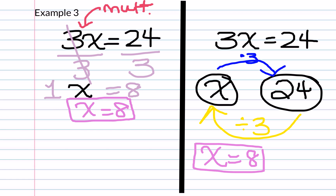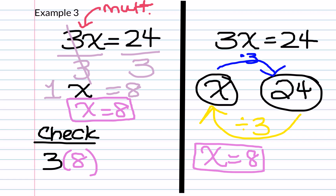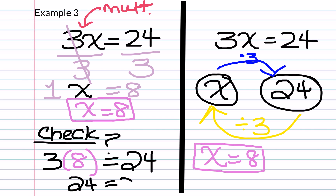Don't forget — when you are done with your problem, you must check your solution. We'll do it using substitution. We write our check, and wherever we see an x, we put the number 8. Remember your parentheses, because that is very important. Now we ask, is 3 times 8 equal to 24? And in fact, it is — so we know we did our problem correctly.